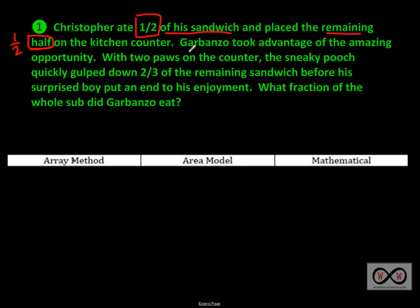Next sentence: Garbanzo took advantage of the amazing opportunity. No math information there — just story information. Next sentence: With two paws on the counter, the sneaky pooch quickly gulped down two-thirds of the remaining sandwich before his surprised boy put an end to his enjoyment. Two-thirds — that's another fraction. So the sneaky pooch, that is Garbanzo, quickly gulped down two-thirds of the remaining sandwich.